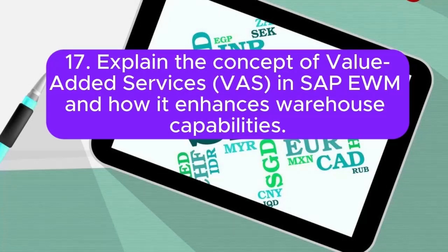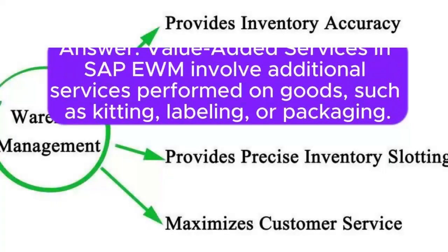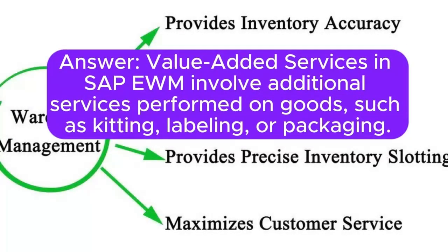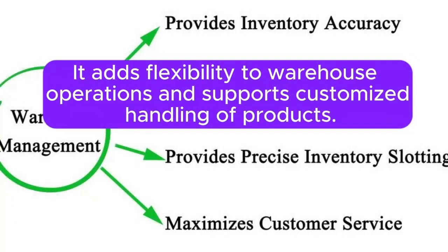Question 17: Explain the concept of value-added services in SAP EWM and how it enhances warehouse capabilities. Value-added services in SAP EWM involve additional services performed on goods, such as kitting, labeling, or packaging. It adds flexibility to warehouse operations and supports customized handling of products.